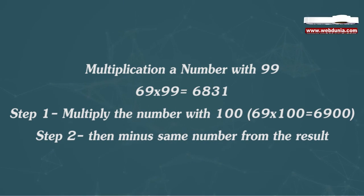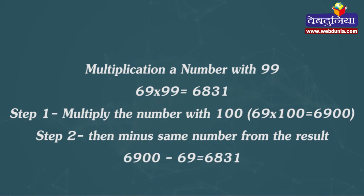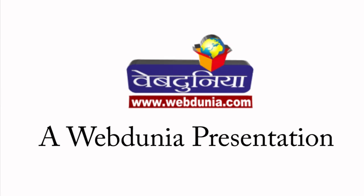Step 2: Then subtract the same number from the result, that is 6900 minus 69 equals 6831.